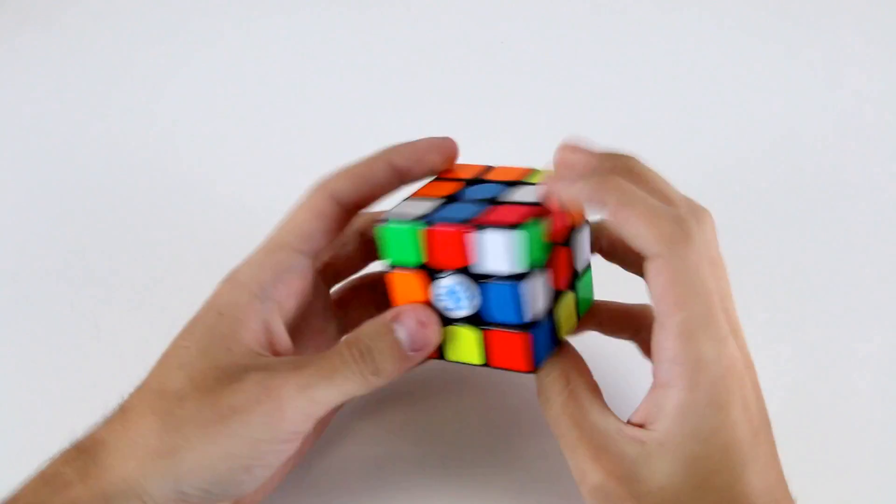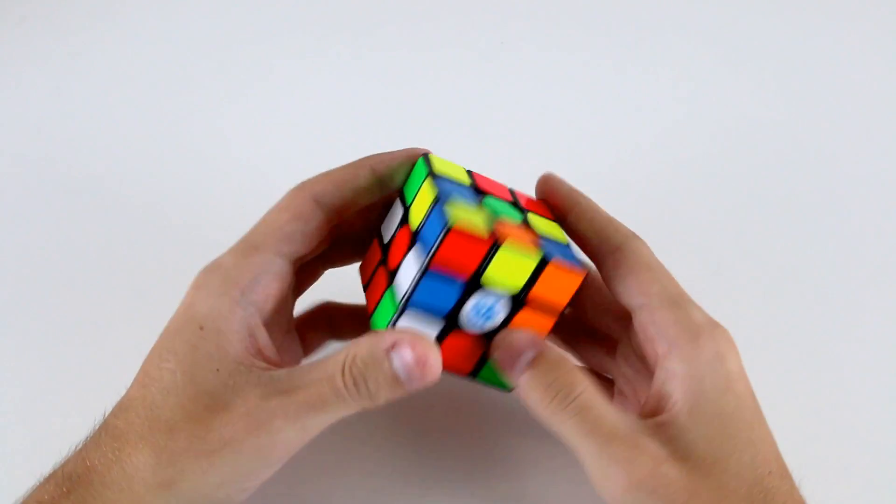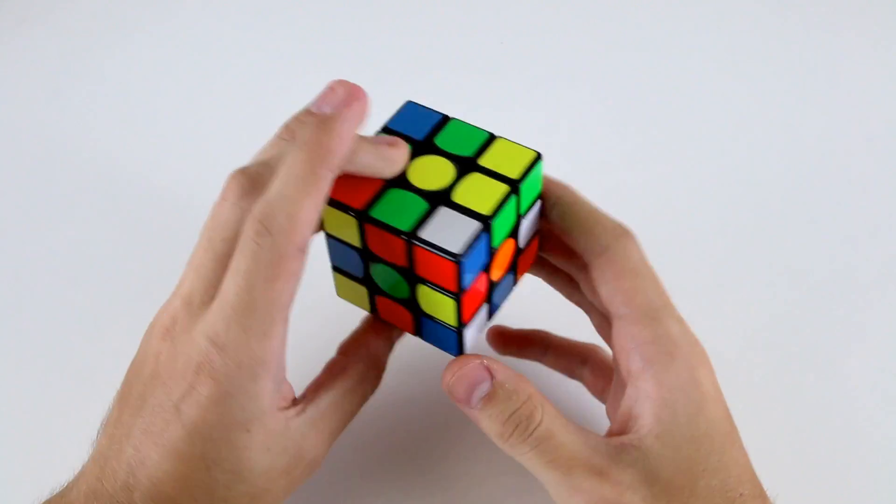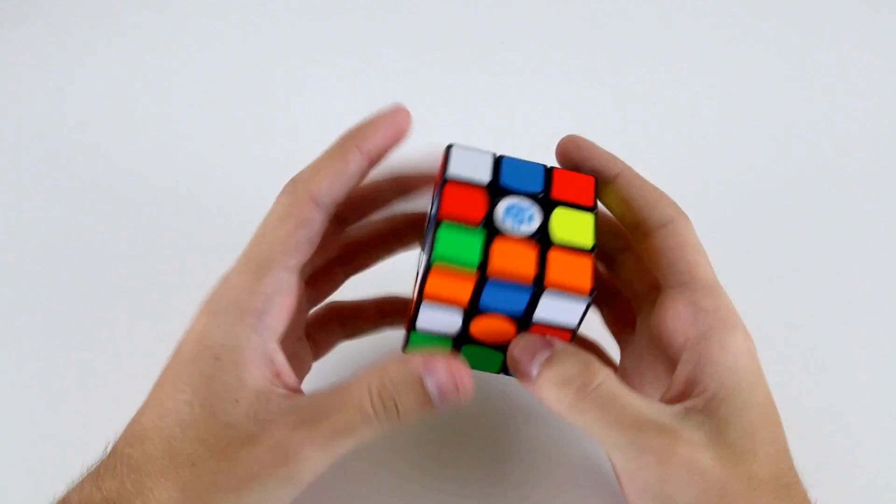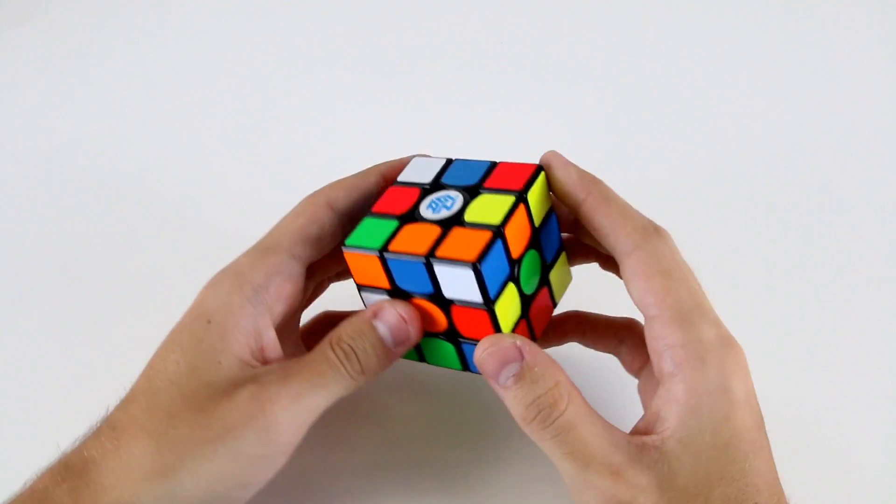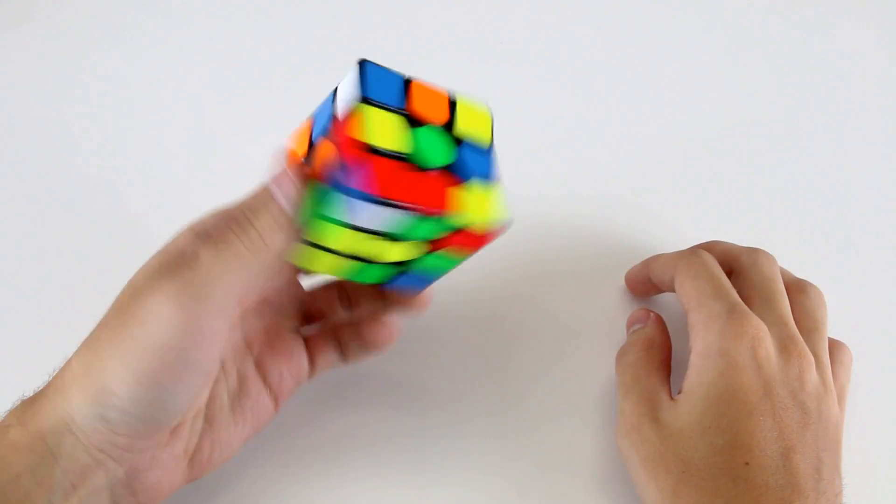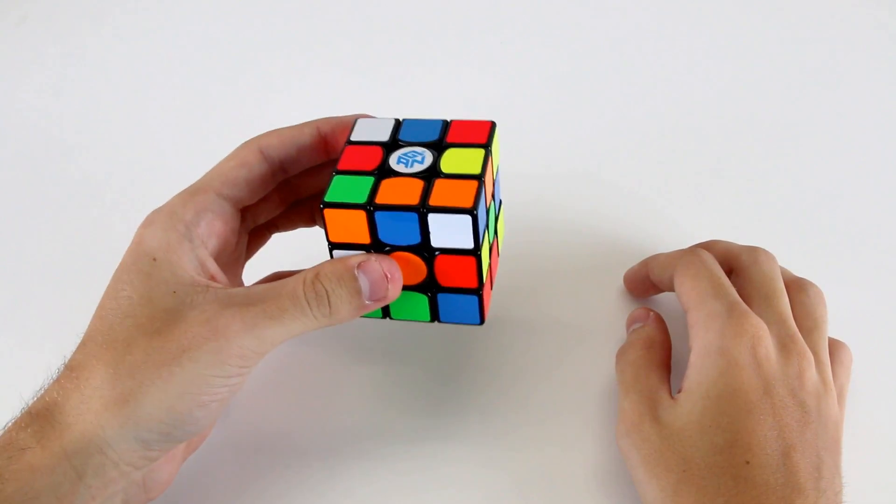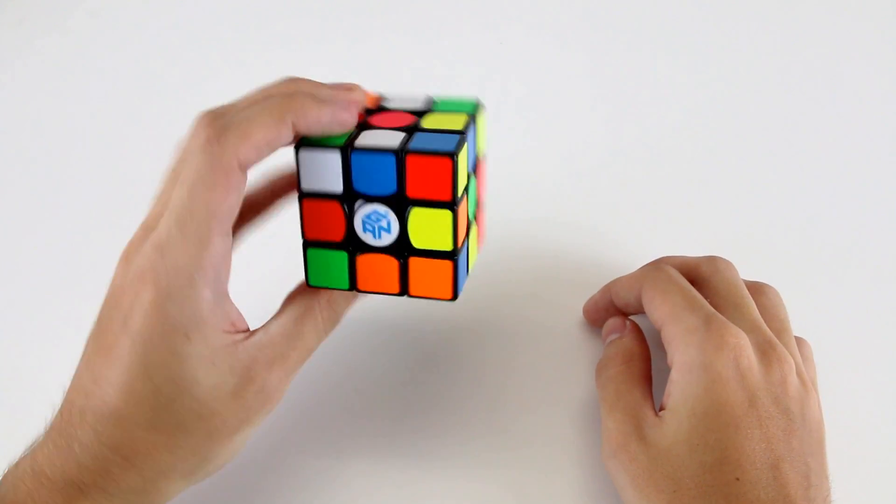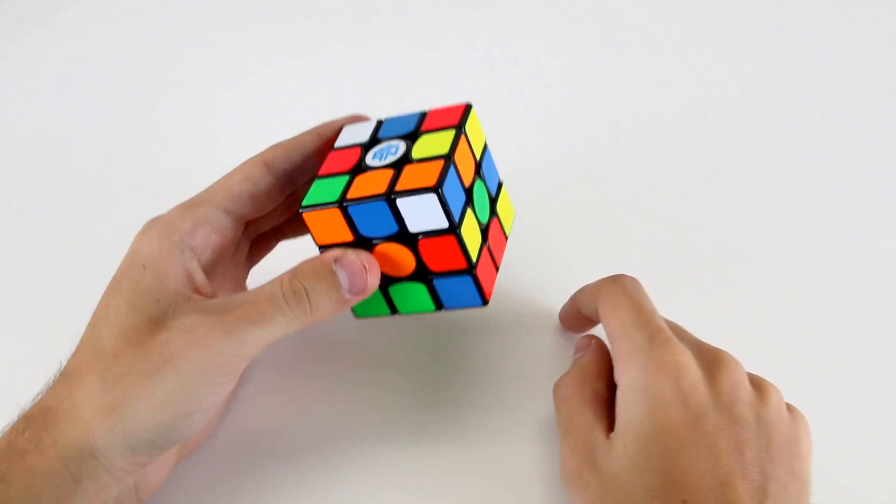Okay, for this next scramble, we have a few different options. The red looks okay, the yellow looks decent, the blue looks decent as well. Let's just go with yellow and see what we can do here. I can do something like D prime, F, R, D prime, R prime, R, D prime from this angle and this corner will end up in this position.